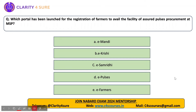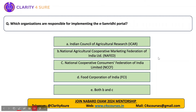Which portal has been launched for the registration of farmers to avail the facility of Assured Pulses Procurement at MSP? It is the eSamridhi portal. NAFED, the National Cooperative Consumers Federation of India Limited (NCCF), and these two organizations are responsible for implementing the eSamridhi portal. Farmers can register on this portal and their pulses will be procured by the government at MSP.